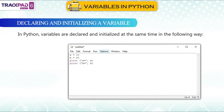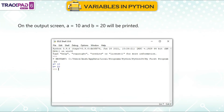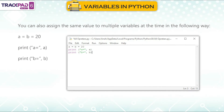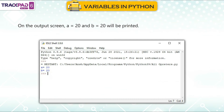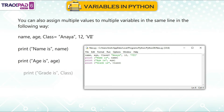Declaring and initializing a variable: In Python, variables are declared and initialized at the same time. For example: a = 10, b = 20, then print("A =", a) and print("B =", b) will output A = 10 and B = 20. You can also assign multiple values to multiple variables in the same line: name, age, grade = "Anaya", 12, "7th". Then print statements will output: name is Anaya, age is 12, and grade is 7th.